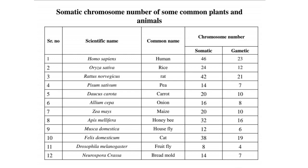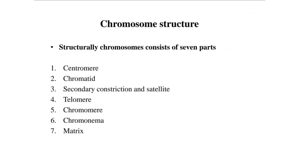For example, Homo sapiens, common name human, has 46 somatic chromosomes and 23 gametic chromosomes. Other species are also listed with their common names and their somatic and gametic chromosome numbers. You can take a screenshot of the table.